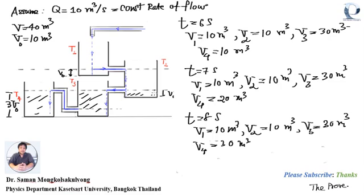We can determine that the water levels in tank 1, tank 2, tank 3, and tank 4 are now all the same level. Next, we determine the water volume at t equals 9 seconds.